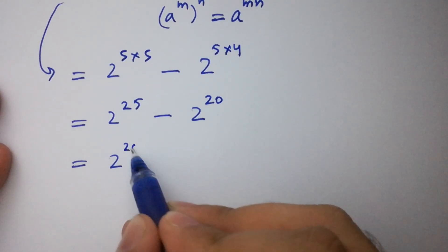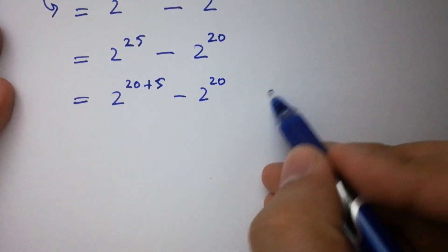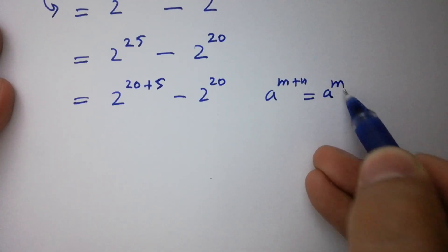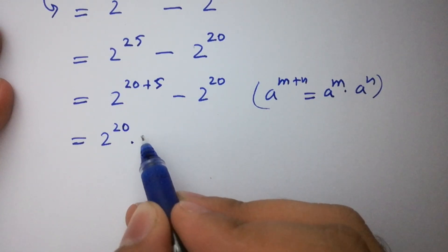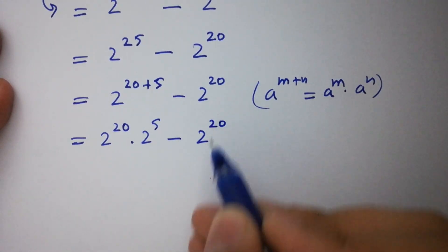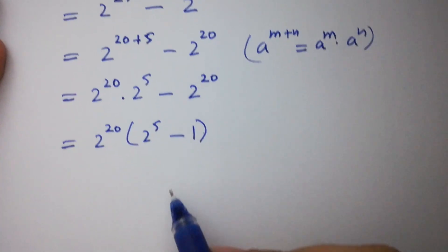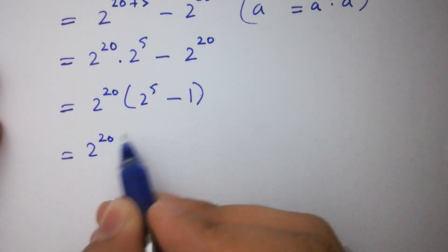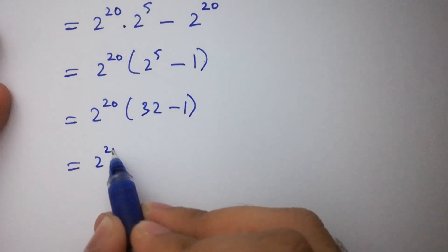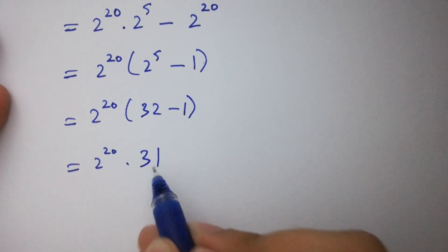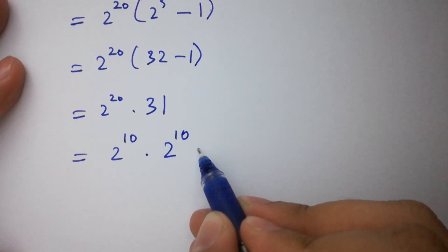We have 2 to the power 25, which is the same as 2 to the power 20 plus 5, minus 2 to the power 20. Using the rule a to the power m plus n equals a to the power m times a to the power n, it will be 2 to the power 20 times 2 to the power 5 minus 2 to the power 20. Taking 2 to the power 20 as common, we have 2 to the power 20 times (2 to the power 5 minus 1), which gives 2 to the power 20 times 31, the same as 2 to the power 10 times 2 to the power 10 times 31.